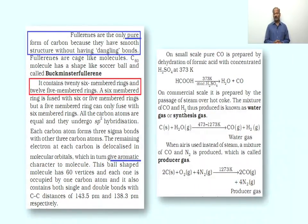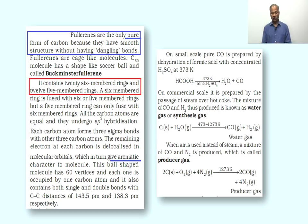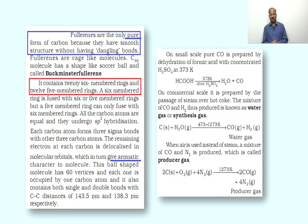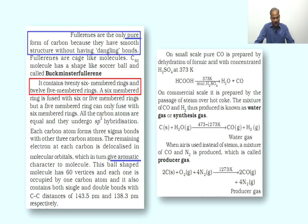To obtain pure carbon monoxide on a small scale, it is prepared by dehydration of formic acid with concentrated sulfuric acid. On a commercial scale, it is prepared by the reaction of steam with red-hot coke. The mixture of carbon monoxide and H₂ produced is called water gas or synthesis gas, because this mixture is used for the synthesis of a large number of organic compounds — that's why it is called syngas. When air is used instead of steam in reaction with coke, the gas produced is called producer gas.